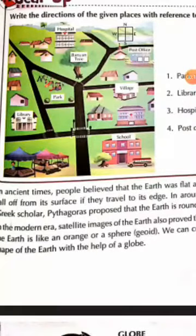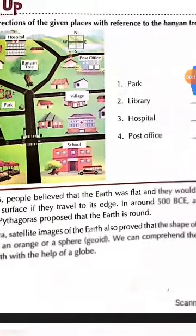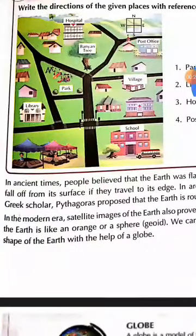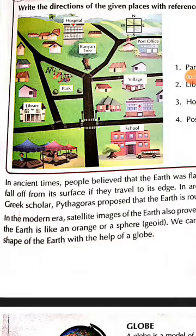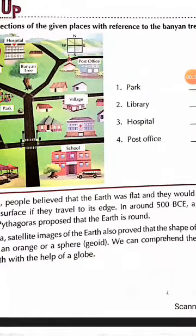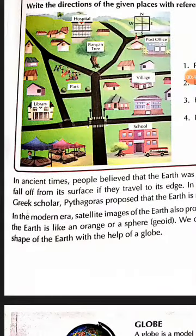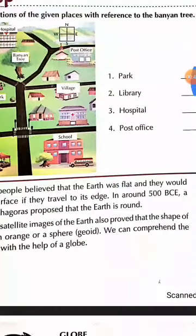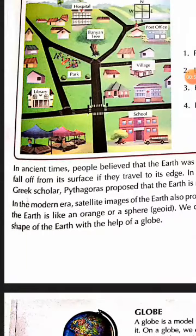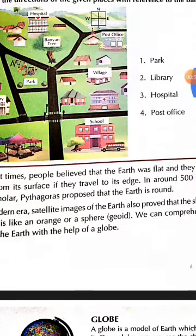In ancient times, people believed that the earth was flat and they would fall off from its surface if they travelled to its edge. In around 500 BCE, before the Christ era, a Greek scholar Pythagoras proposed that the earth is round.